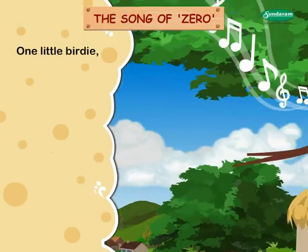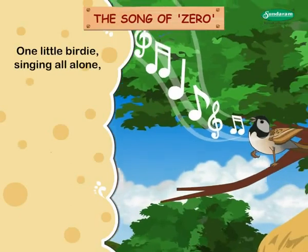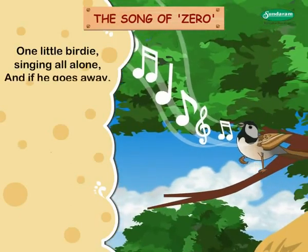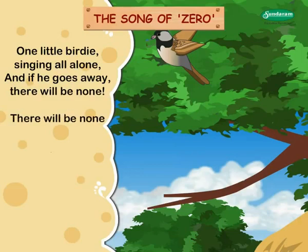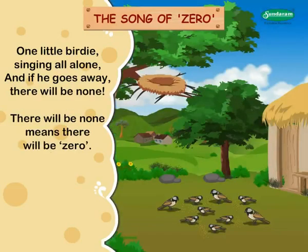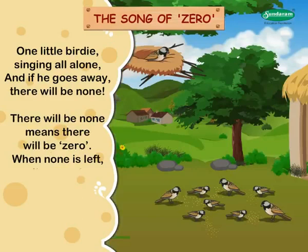One little birdie singing all alone. And if he goes away, there will be none. There will be none means there will be zero. When none is left, it means there's zero left.